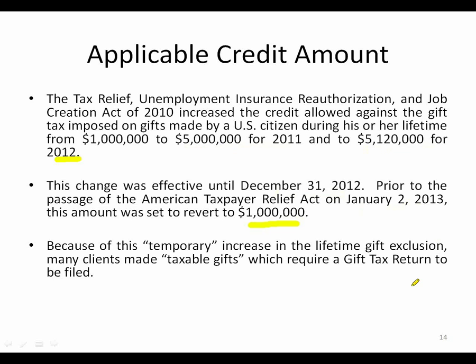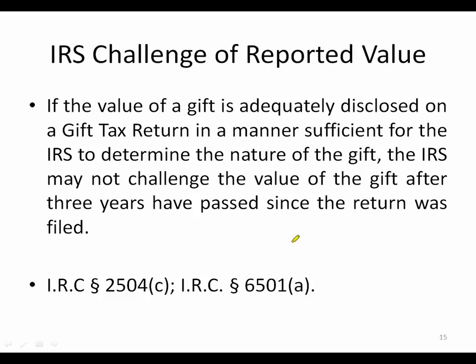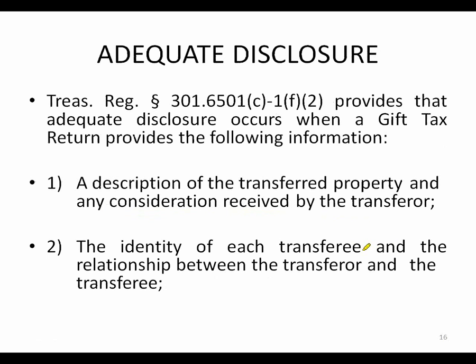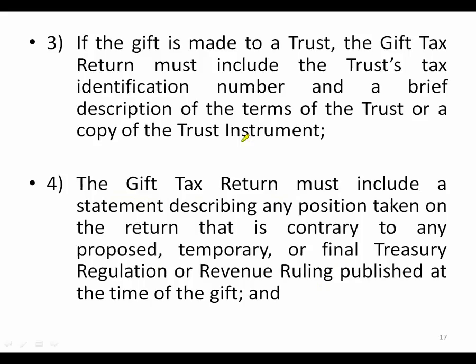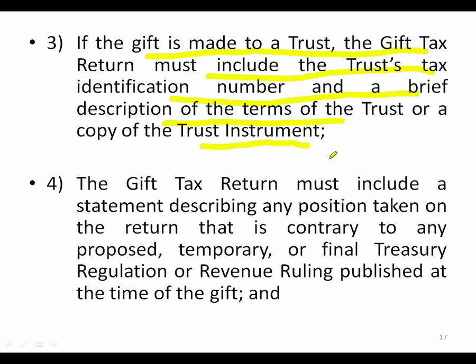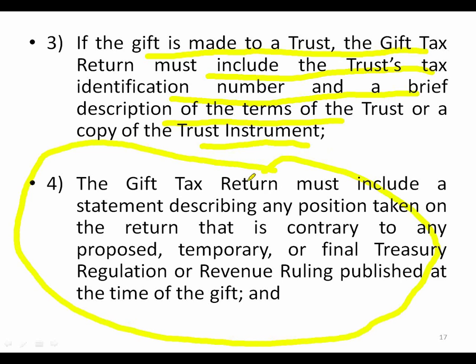The IRS can challenge the value of a reported gift. If adequate disclosure is provided and three years have passed since filing, under Internal Revenue Code Section 2504(c), the IRS cannot come back and challenge the value — giving you finality. To provide adequate disclosure you need: a description of the transferred property; the identity of each transferee and the relationship between transferor and transferee; and if the gift is to a trust, the trust's tax identification number plus a brief description of the trust terms or a copy of the trust instrument.